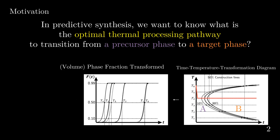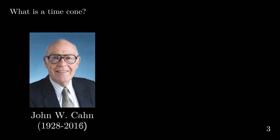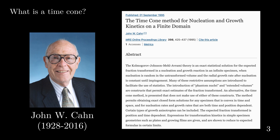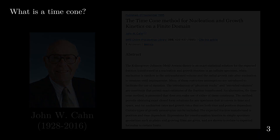Now we know how we can get a TTT diagram from the JMAC equation, so we need to talk about how we can derive the JMAC equation itself. As mentioned earlier, we're going to use the time cone method to do that. The logical order of thinking is: we start from the time cone method to get the JMAC equation, and by plotting the JMAC equation at different temperatures, we can get the TTT diagram, which tells us the optimal thermal processing pathway from the precursor phase to a target phase. The time cone method was originally developed by the late Professor John Kahn in his paper titled 'The Time Cone Method for Nucleation and Growth Kinetics on a Finite Domain.' To talk about the time cone method, we first need to ask: what is a time cone?